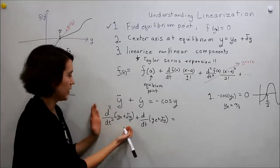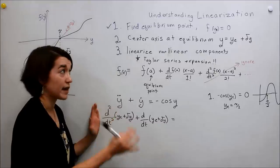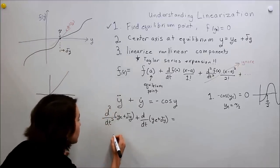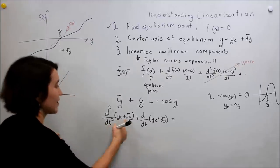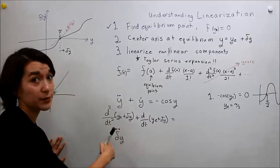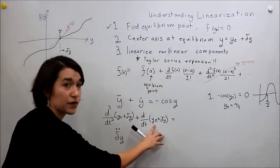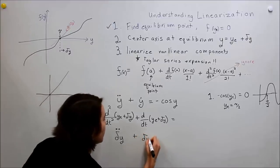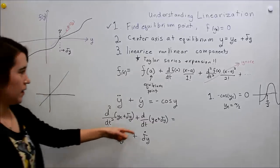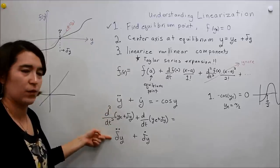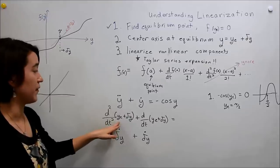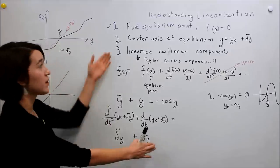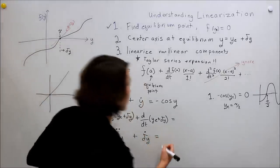If you look at just this term, y_e is a constant value — it's the equilibrium value, not a variable. So the double derivative of a constant is zero, giving us just the double derivative of δy, written as δ̈y. The same thing happens for the first derivative: the first derivative of a constant is zero, so we get just δ̇y. So we replaced our original y terms with δy's because the derivatives of the constant y_e are zero. This is already linear.